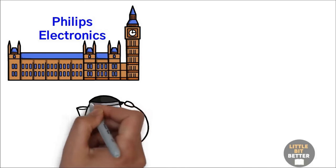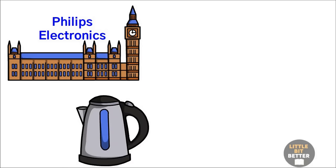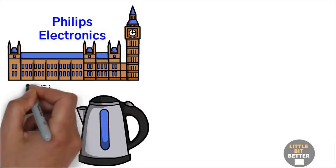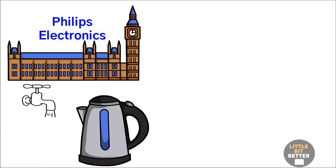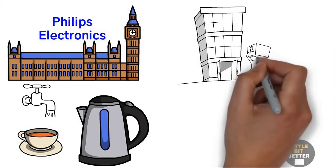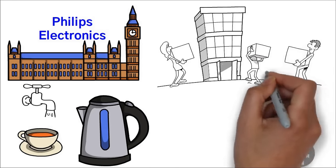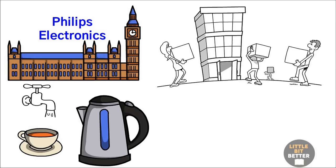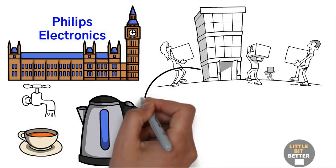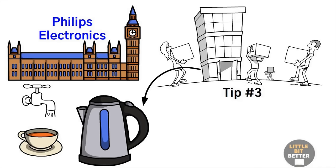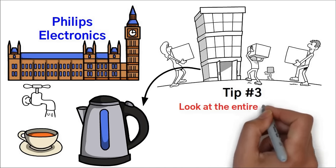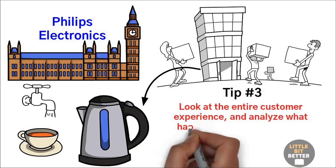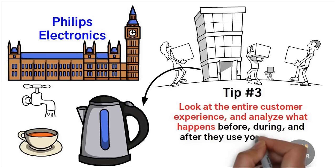Phillips realized that the problem people had with brewing tea wasn't with the tea kettle itself, but with the water used to make the tea. The tap water had a mineral called lime scale that built up in the kettle as it boiled and then ended up in the tea. People had to use a spoon to scoop out the lime scale before drinking their tea. The tea kettle industry didn't think this was their problem, but Phillips saw an opportunity to create a new product that solved this issue and made the tea kettle more valuable to buyers. This helped Phillips create a new market space in the tea kettle industry. So tip number three to discover a blue ocean opportunity is to look at the entire customer experience and analyze what happens before, during, and after they use your product.